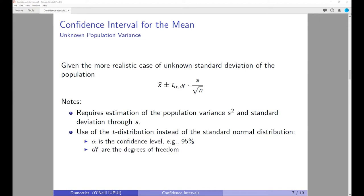The approach is very similar to constructing the confidence interval when the population standard deviation is known: we divide by the estimated standard deviation divided by the square root of n. But now we cannot use the z-value; we have to use what is called the t-value, which is based on the t-distribution, or the Student's distribution.